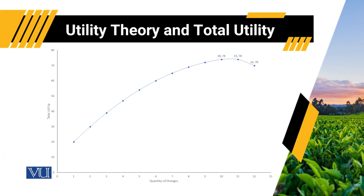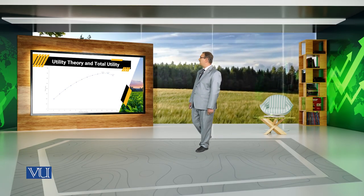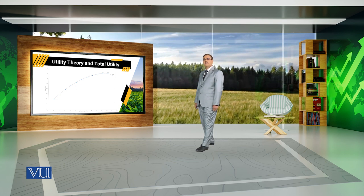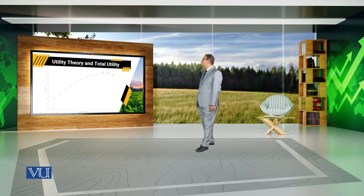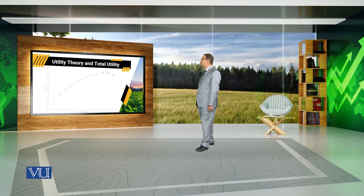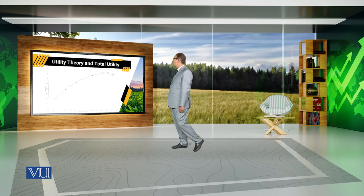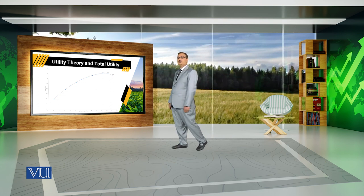The same pattern is shown in the diagram, where quantity of oranges is on the horizontal axis and utility is on the vertical axis. From the graph, we can see utility is maximum when the consumer is consuming 11 units of oranges. Against the 11th unit, he is getting utility equal to 74. But when he uses the 12th unit, his total utility decreases.